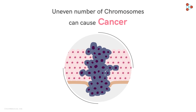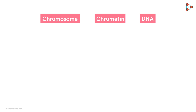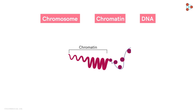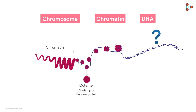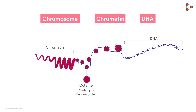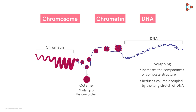Before moving ahead with the concept of mitosis, let's get through a few important terms first. We have something called DNA, chromatin, and chromosomes. We can see tangled thread-like structures in the nucleus — these are called chromatin. If we zoom in further, these thread-like structures appear to have a bead-on-string arrangement. These beads are nothing but octamers made up of histone proteins, and this string-like structure wrapped around the histone octamer is DNA. This wrapping helps increase the compactness of the complete structure, reducing the volume occupied by the long stretch of DNA while keeping its length intact.